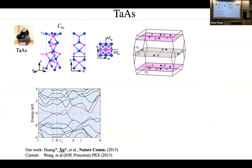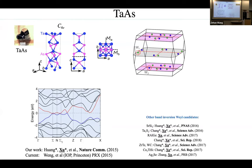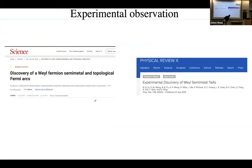This led to the experimental discovery — which I'll discuss in more detail in the next lecture. We found Fermi arcs and Weyl points in the tantalum arsenide class of materials, concurrently with the IOP group. I'll stop here and continue in the next lecture.